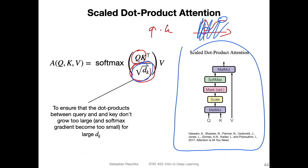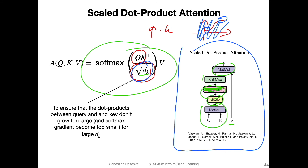Here for reference is the visualization of the scaled dot product attention from the 'Attention Is All You Need' paper, summarizing the matrix multiplication and scaling visually. There is also an optional mask — we'll cover that later when discussing the full transformer, specifically the decoder component. Then there's the softmax and the final matrix multiplication with V.